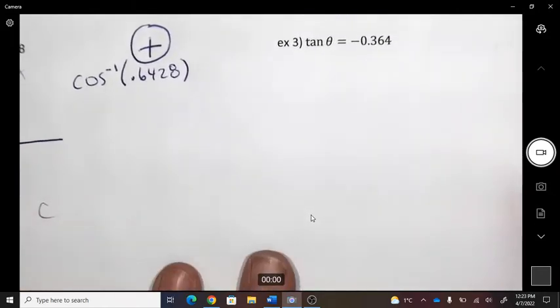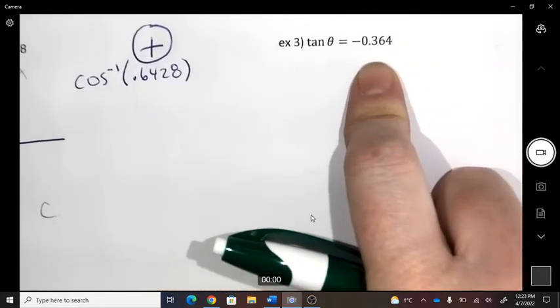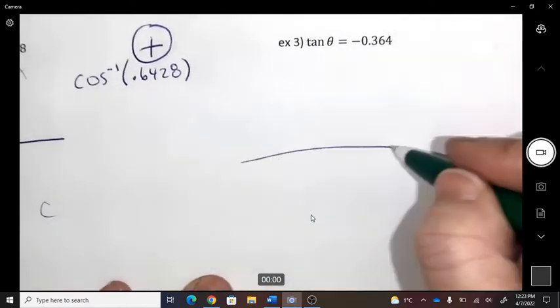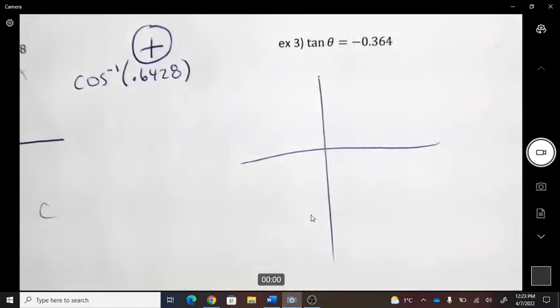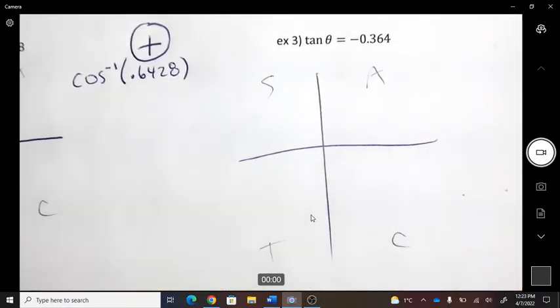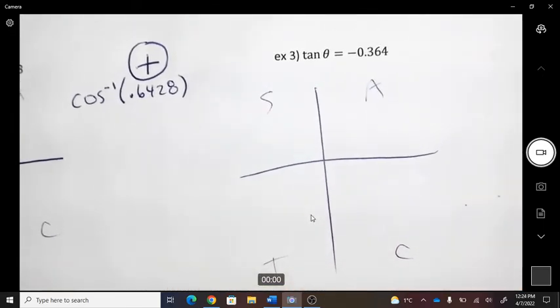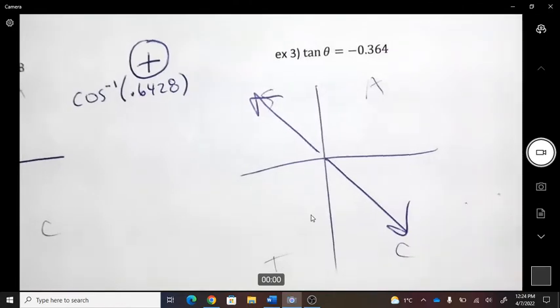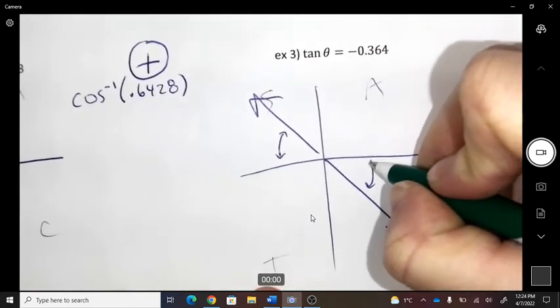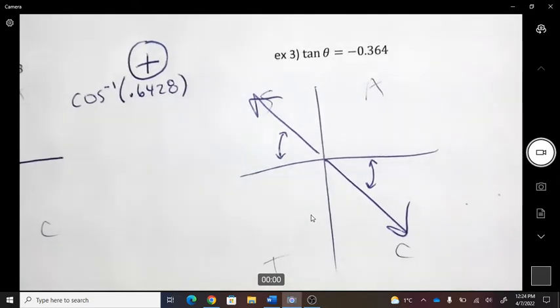Number three, ready? Step one, isolate if you need to, and I don't. Step two, tell me the quadrants. Using the ASTC visual, where is tan of an angle a negative trig value? Sine is up down, cos is left right, and tan is looking at diagonals. And I'm already going to make sure I connect it with the x-axis.